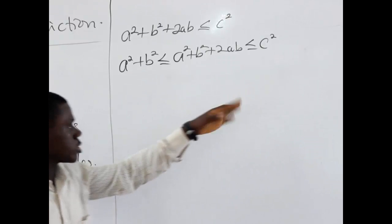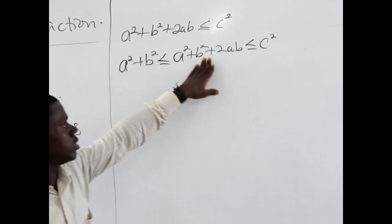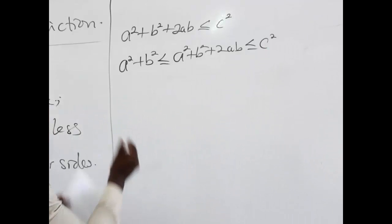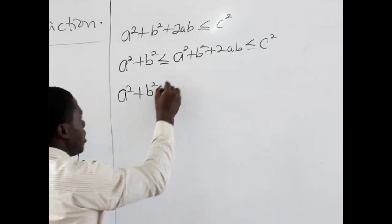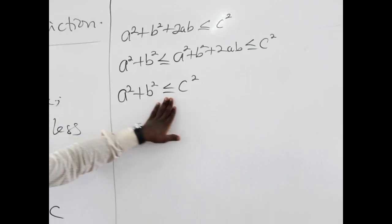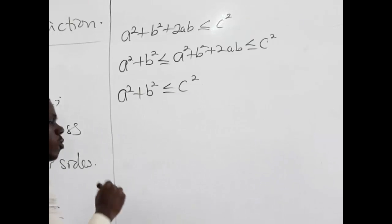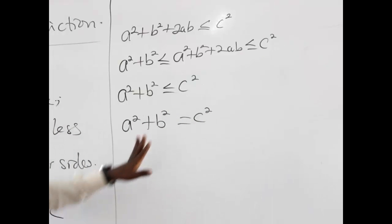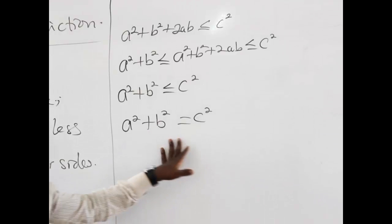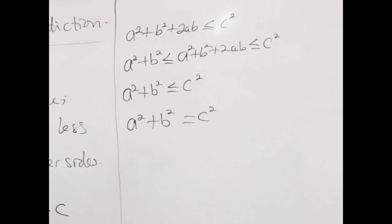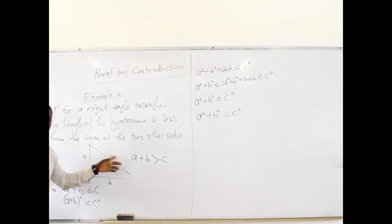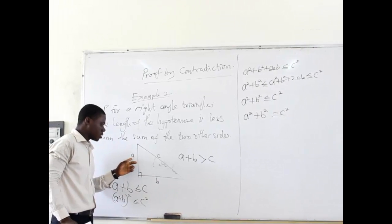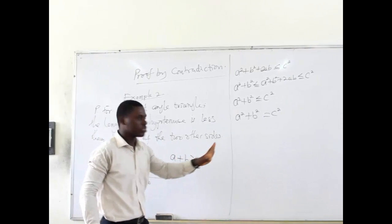Having done this, we can infer from these steps that A squared plus B squared is less than or equal to C squared. But interestingly, we also know that for a right angle triangle, A squared plus B squared should be equal to C squared. This is the Pythagorean theorem, proven by Pythagoras, which states that the square of the hypotenuse equals the sum of the squares of the other two sides, A and B.